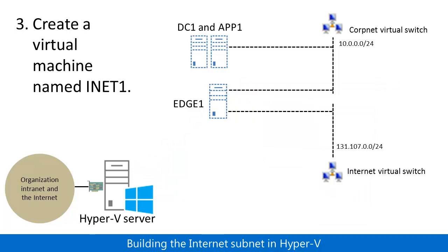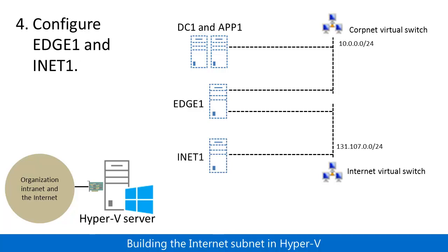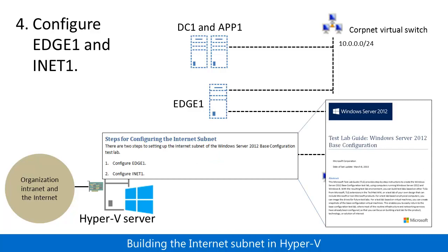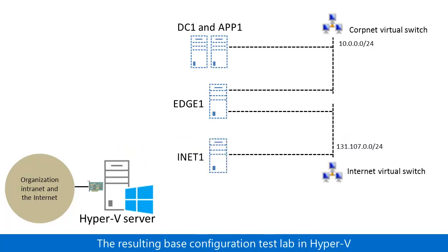In step three, you create a new virtual machine named iNet1 that is connected to the Internet virtual switch. In step four, you configure Edge1 and iNet1 using the steps for configuring the Internet subnet section of the Windows Server 2012 Base Configuration Test Lab Guide. The resulting Base Configuration Test Lab has the four server computers on the CorpNet and Internet virtual switches, and the Client1 computer can be connected to either one depending on what you want to test.